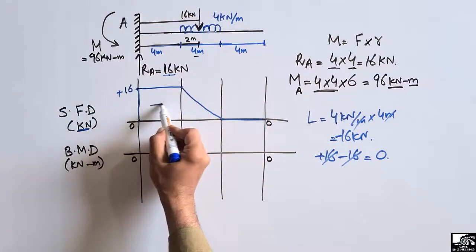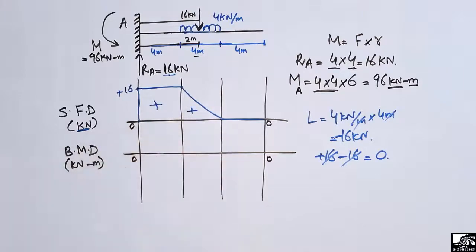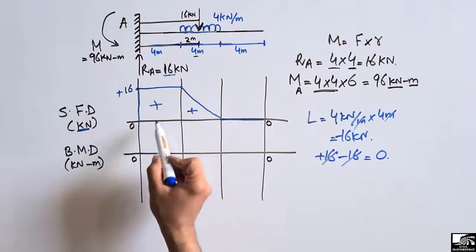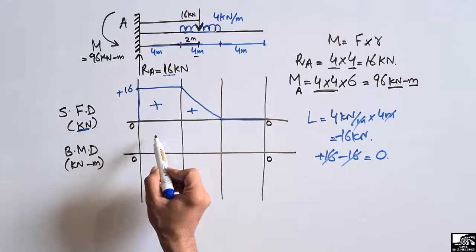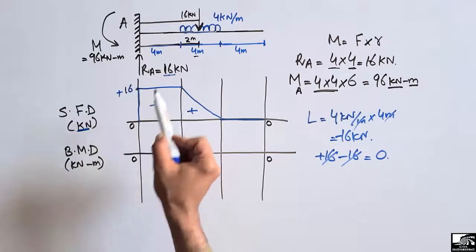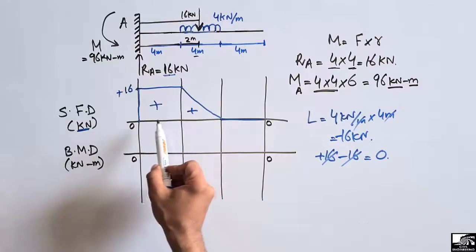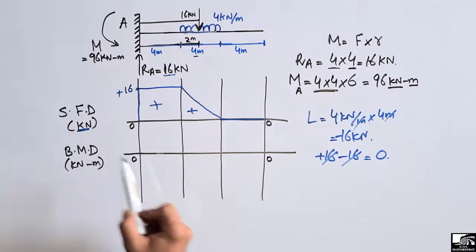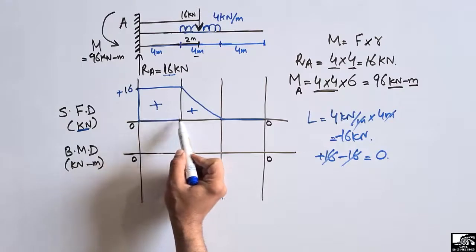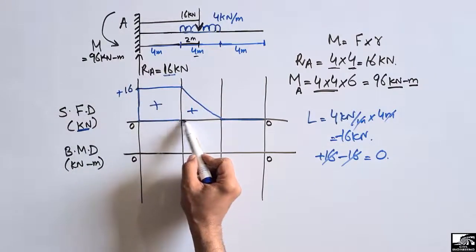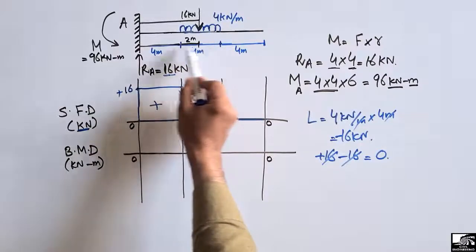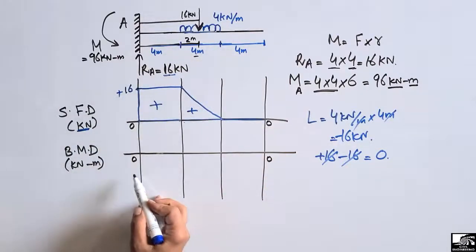This shear force is positive because it is above the reference line. If it were below the reference line, we would call it negative. We can confirm from the beam diagram that the first distance is 4 meters and the second distance is also 4 meters. Now we will use the shear force diagram to find the bending moment diagram.